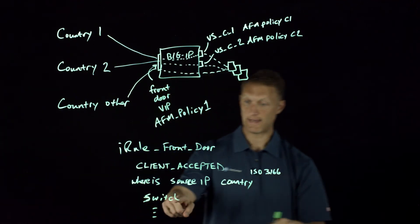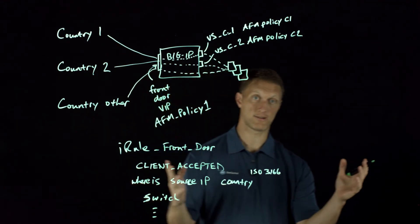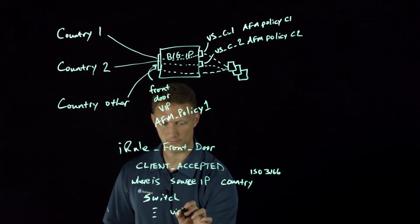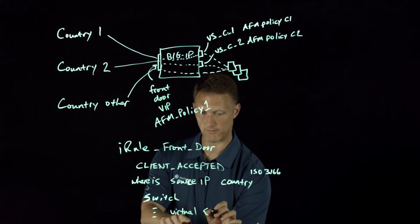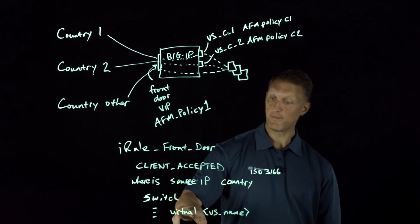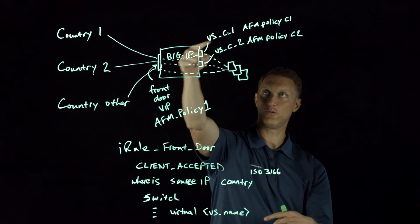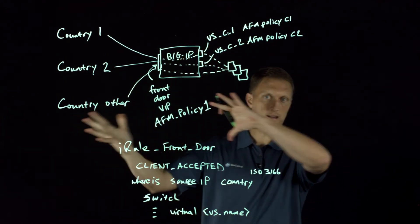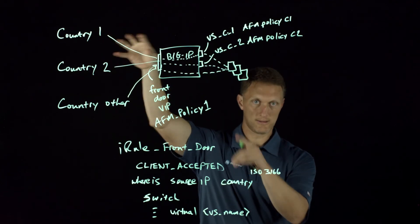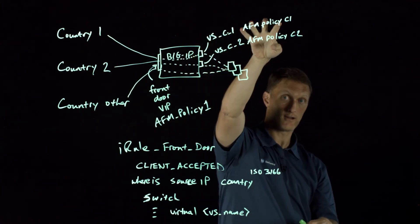You can use the whereis command based on the source IP address, pull out the country code, and then do a switch on the country code and take action. So: switch — if country code equals country one, then you're going to use a command called 'virtual.' That's the actual command: virtual, then the VS name. You can use the virtual command and put the virtual server name. What the virtual command does is: if all these conditions line up, you send the connection to the name of that backend virtual server. So if a client from country one comes in, we look at their source IP, determine their country code, and use the virtual command to send them to VS country one — which has AFM policy country one tied to it.